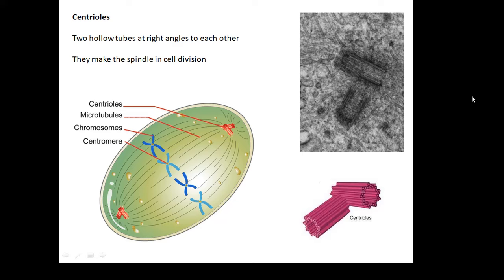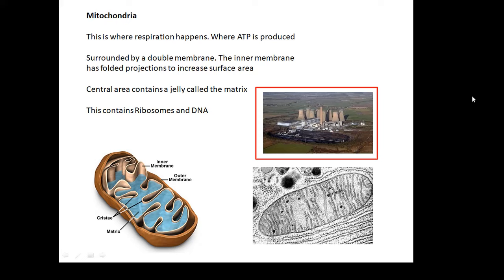Mitochondria. Very important. This is where respiration happens. A chemical called ATP, which is the chemical energy used by the cell, ATP, I believe it's adenosine triphosphate, is produced. They're like the little power stations in the cell. They are surrounded by a double membrane, the inner membrane has lots of folds to give it a large surface area, and then the central area contains a jelly called the matrix, and all the chemical reactions happen which produce ATP.